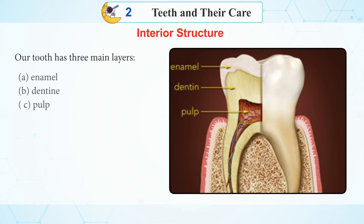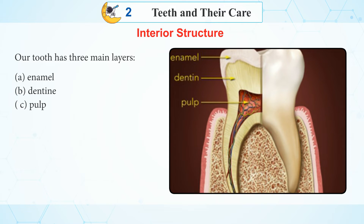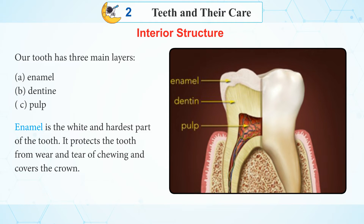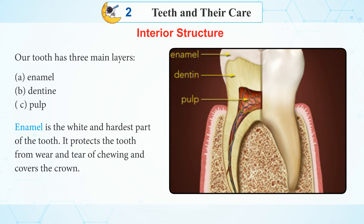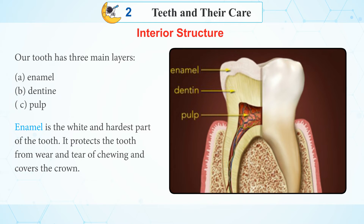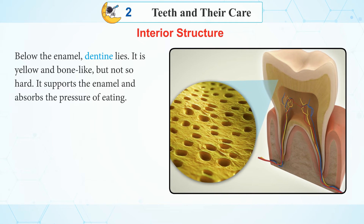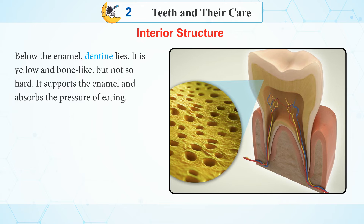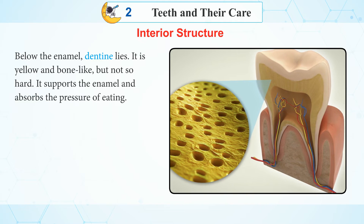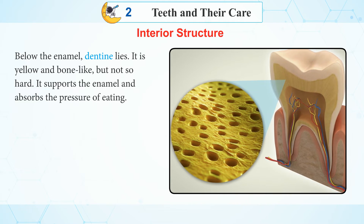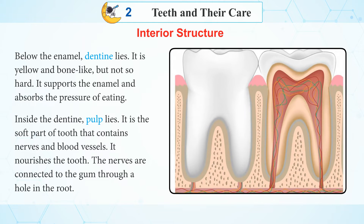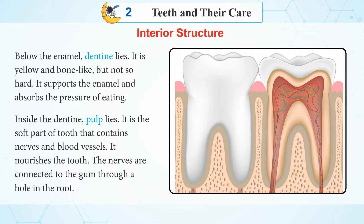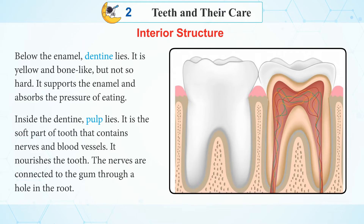Interior structure. Our tooth has three main layers: Enamel, Dentine, and Pulp. Enamel is the white and hardest part of the tooth; it protects the tooth from wear and tear of chewing and covers the crown. Below the enamel, dentine lies — it is yellow and bone-like, but not so hard. It supports the enamel and absorbs the pressure of eating. Inside the dentine, pulp lies. It is a soft part of the tooth that contains nerves and blood vessels, and it nourishes the tooth.